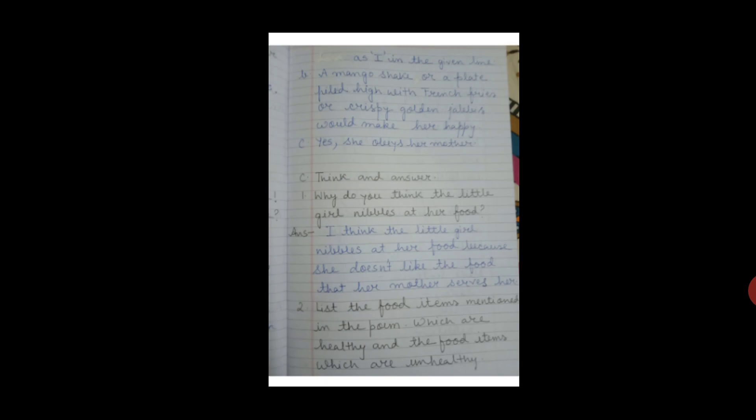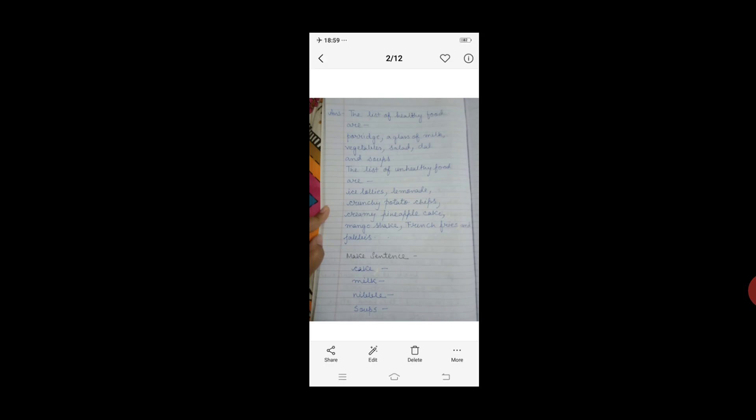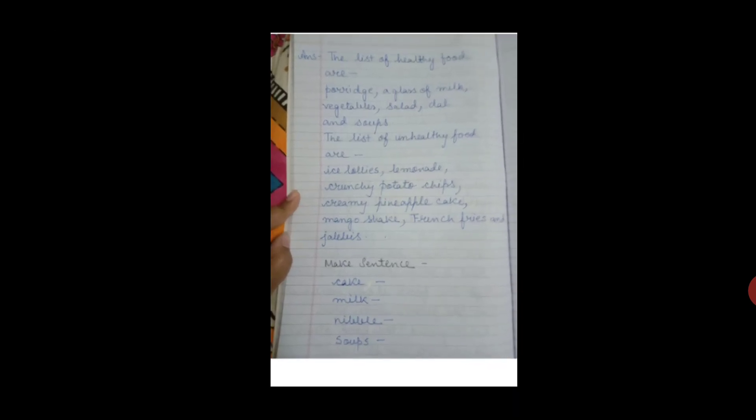Question number 2: List the food items mentioned in the poem which are healthy and the food items which are unhealthy. Answer: The list of healthy food are: porridge, a glass of milk, vegetables, salad, dal and soups.